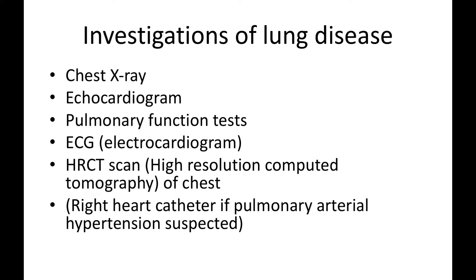An echocardiogram — a cardiac ultrasound where you get some jelly on the chest and someone tips you over onto your left side to look at the different heart chambers — is useful to look for pulmonary hypertension. You can't diagnose pulmonary hypertension from an echocardiogram but you can suspect it. Breathing tests, or pulmonary function tests, are useful for detecting both pulmonary hypertension and lung fibrosis, as you get different patterns of abnormality. These are the tests where you go into a big box-like device and breathe in and out.